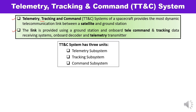In detail, this overall system consists of three units: first is the telemetry subsystem, second is the tracking subsystem, and third is the command subsystem. We will discuss in detail one by one — what is telemetry, what is tracking, what is command, and what is the function of each unit.